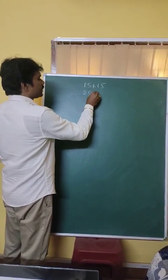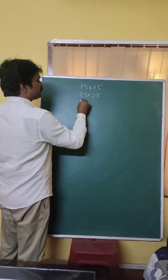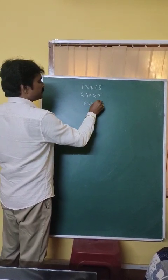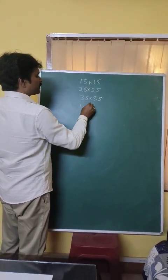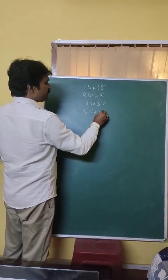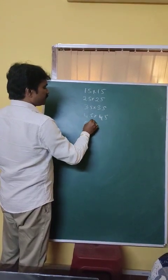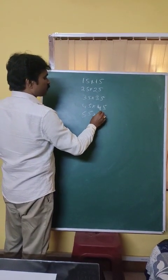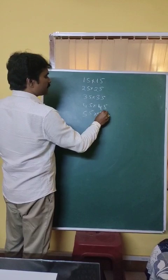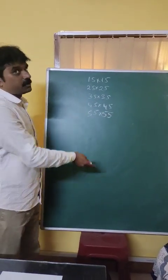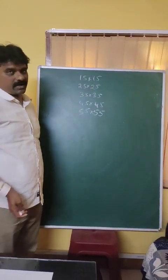25 into 25, 35 into 35, 45 into 45, 55 into 55. Like this we are going to know and multiply in easy method and you can do as many as you want.